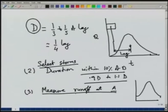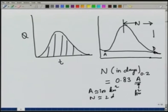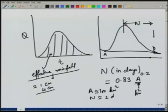When we measure runoff at A, we estimate the direct runoff hydrograph using those techniques. We should also be careful that the area under the curve, which represents the effective rainfall, should be close to 1 centimeter, because our aim is to derive hydrographs for 1 centimeter of rain. Storms up to about 4 centimeters can be used, and once we find the area, we divide by that ordinate.